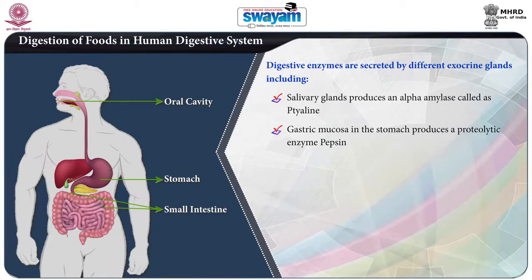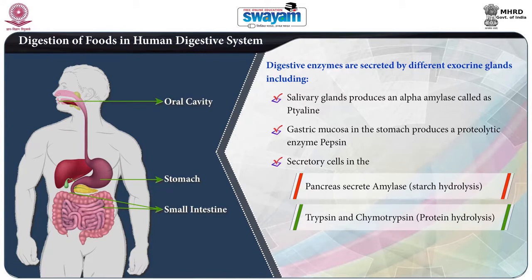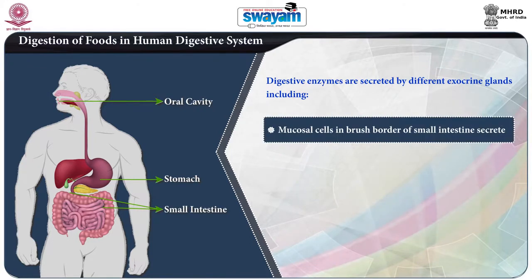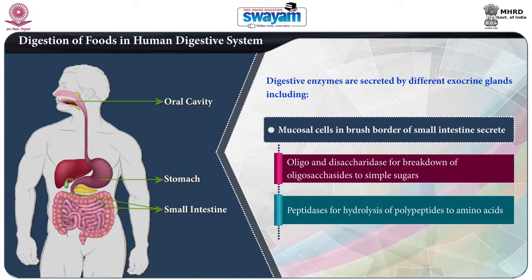Gastric mucosa in the stomach produces a proteolytic enzyme called pepsin. Secretory cells in the pancreas secrete amylases, trypsin, and chymotrypsin. Amylase acts on starch, whereas trypsin and chymotrypsin act on protein. The pancreas also produces lipase which hydrolyzes fat. Mucosal cells in the brush border of the small intestine secrete oligosaccharidases and disaccharidases for breakdown of oligosaccharides to simple sugars, and peptidases for hydrolysis of polypeptides to amino acids.